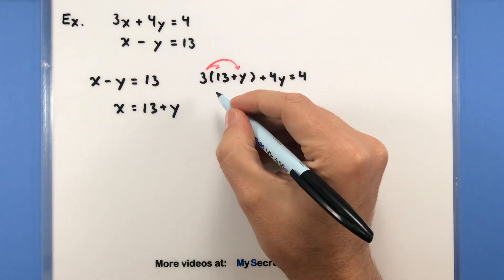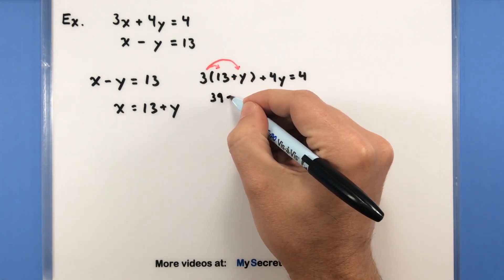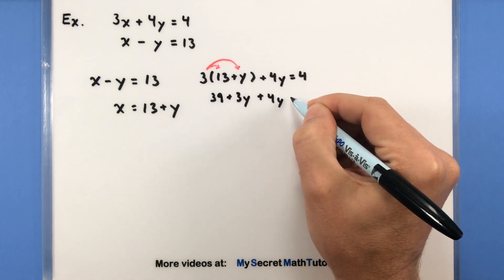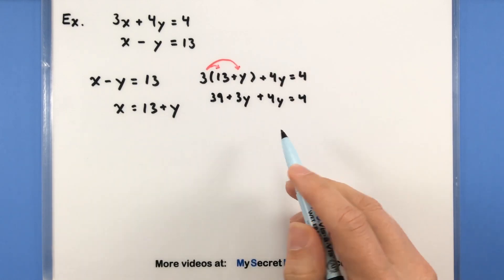through with this 3 here. So that'll be 39 + 3y + 4y, still equal to 4. And we're off solving for this y component.